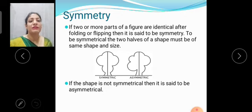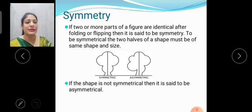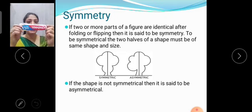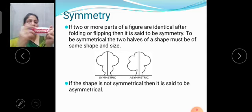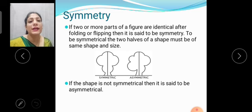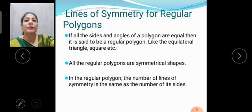But if I am talking about asymmetrical shape, if the shape is not symmetrical, then it is said to be asymmetrical. In this Colgate toothpaste, when we fold it from the half, they are not in the same shape as you can see here. So they are asymmetrical shape.